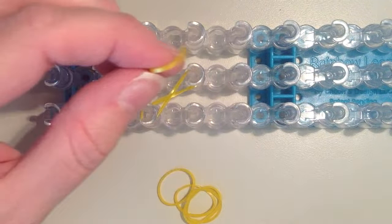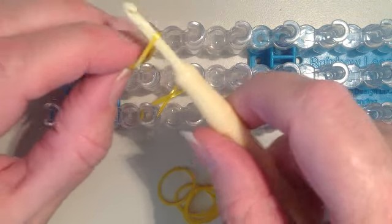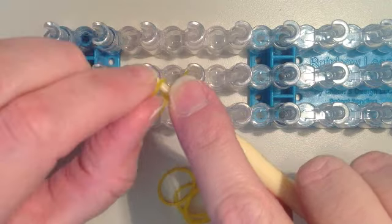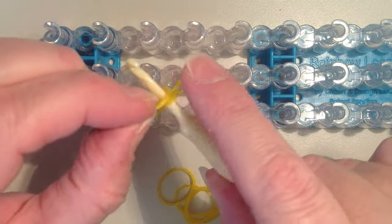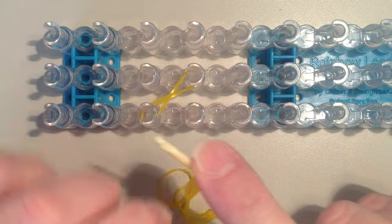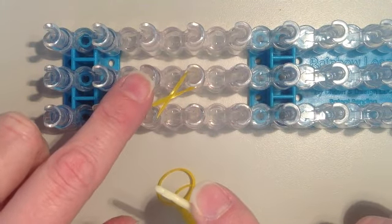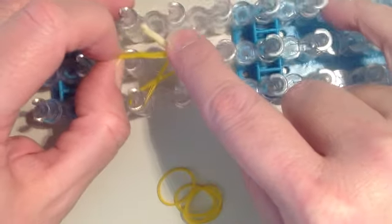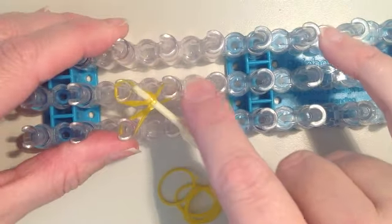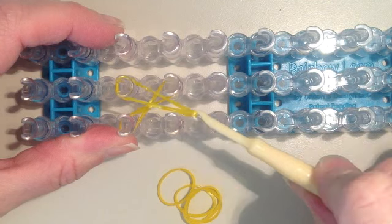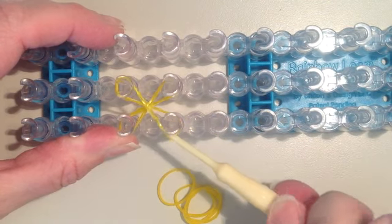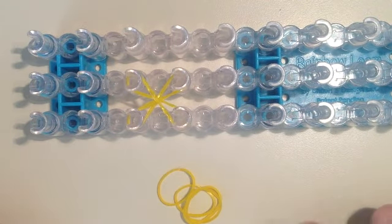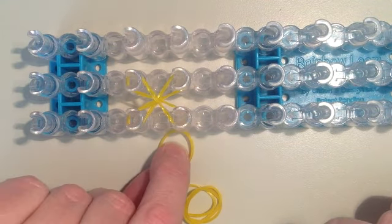Now you want to take a second band and do the same thing. Put it on your hook, then hold it on there and twist it around a second time so that it's doubled. This time we're going to start at the top left. Pull it down with your hook and twist, and then push it down. So that's going to be the bottom layer, and both of the bands are doubled.